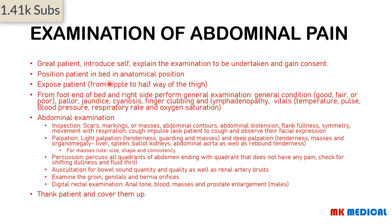For examination of abdominal pain, the same preliminaries apply: greet, introduce, explain, consent, and position the patient. Expose from the nipple to halfway through the thigh (or to the pubis for modesty). Perform a general examination from the foot end and right side of the bed: general condition, pallor, jaundice, cyanosis, finger clubbing, lymphadenopathy, and vitals. For the abdominal-specific general examination, check the palms for Dupuytren's contractures, leukonychia, koilonychia, and palmar erythema.